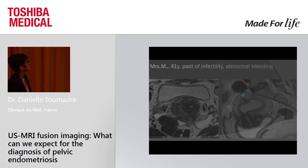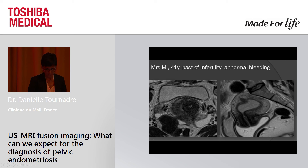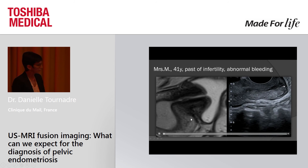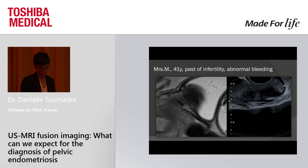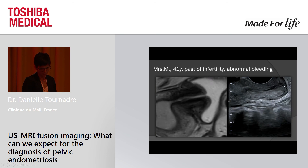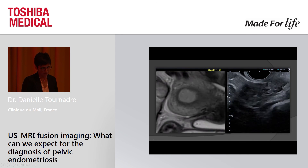Another case of disagreement: a 41-year-old woman with a past history of infertility. MRI was performed for abnormal bleeding and the radiologist suspected a nodule of deep endometriosis in the uterosacral ligament of 10 centimeters with a retroverted uterus. During fusion imaging, the uterus was in an anterior position and no nodule was seen — the uterus was very mobile and there was no nodule.